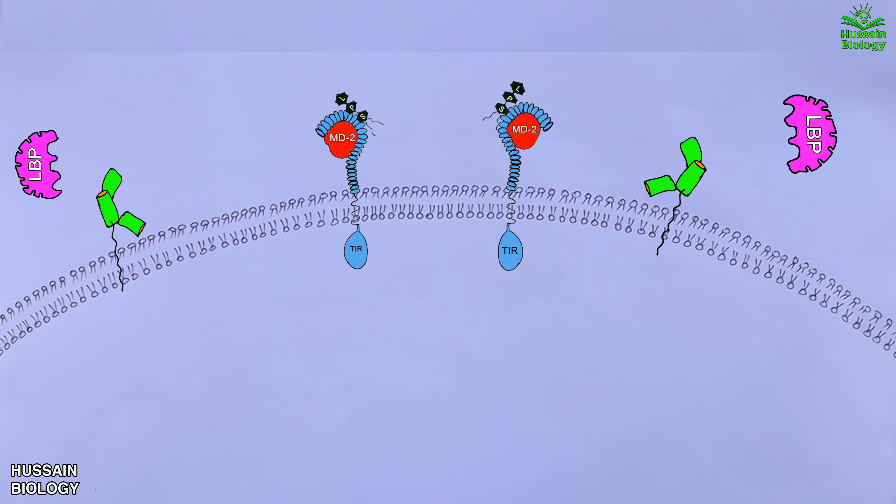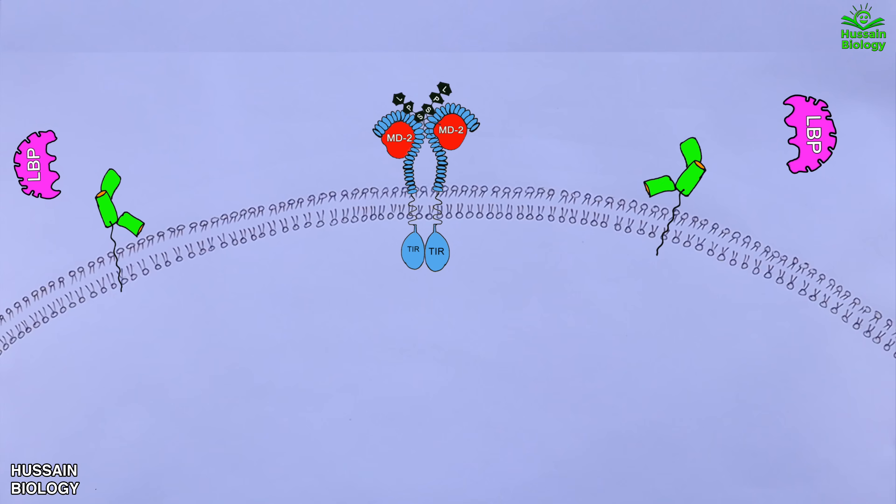Now first of all after ligand binding that's when LPS binds with the TLR monomers, we get the dimerization of TLR monomers as shown in the animation. That ultimately leads to activation of intracellular TIR domains of TLR4 proteins which then drives the activation of downstream proteins for signaling process.